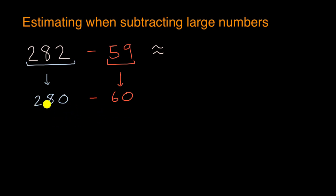You could view this as 28 tens minus six tens. And so if you have 28 of something minus six of it, you're going to be left with 22 of that something. And so you could say that this is going to be 22 tens.